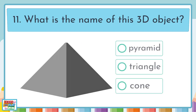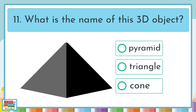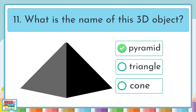Question 11. What is the name of this 3D object? A pyramid, a triangle, or a cone? It's a pyramid.